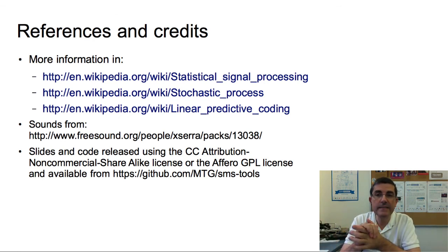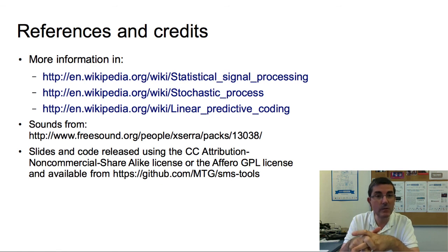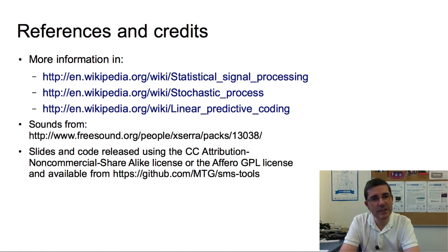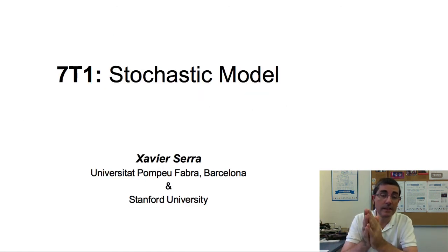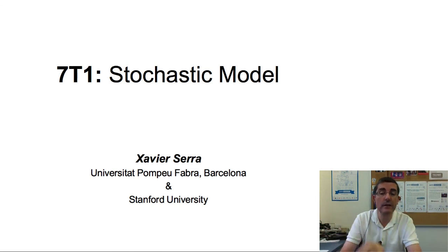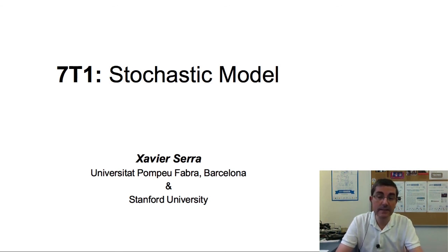The field of statistical signal processing is quite an advanced topic, and most references are quite complex. Starting with the relevant Wikipedia pages can provide links and descriptions to stochastic processes and statistical signal processing more broadly. In this lecture we talked about stochastic models — the goal was to introduce a strategy to model sounds, or parts of sounds, that cannot be well represented with sinusoids. In the next lecture we will see how to combine these stochastic models with the sinusoidal-based models. See you in the next lecture.